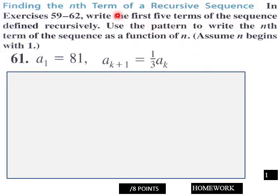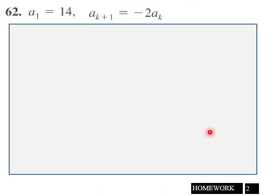Write the first five terms of the sequence that's defined recursively. Use the pattern to write the nth term of the sequence as a function of n. Assume n begins with 1. In this case, a₁ equals 81, aₖ₊₁ equals 1/3 aₖ. So write the first five terms of this recursive sequence. This is eight points for page one. Page two is the same thing, you got a recursive sequence, eight points for this recursive sequence.